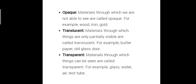The next property is the passage of light. Opaque materials are those through which we cannot see — examples include wood, iron, and gold. Translucent materials are those through which only partial rays of light can pass, so the image formed is blurred. Examples of translucent materials are butter paper and old glass doors.